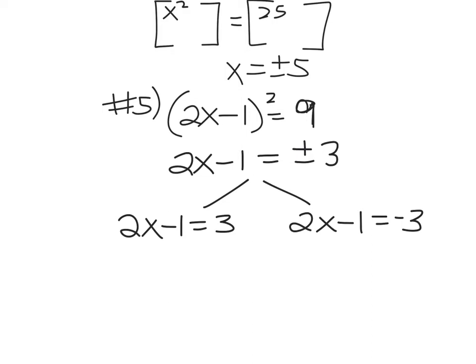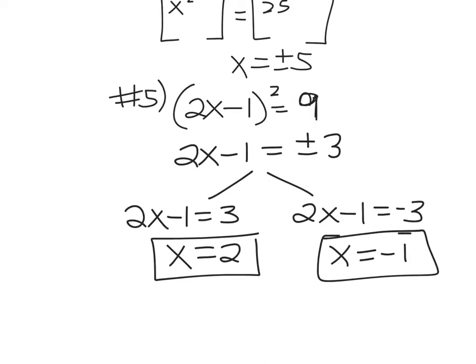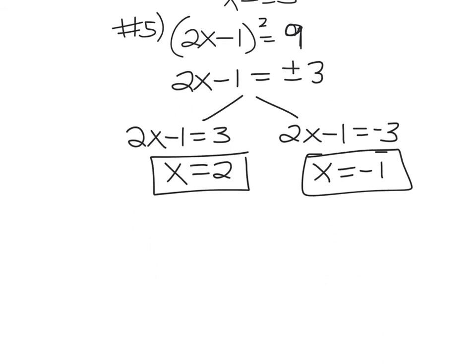So I've got 2x minus 1 can equal 3, or 2x minus 1 could equal negative 3, and it's going to give me the two answers that I need. Now, right here, if you're good at solving this in your head, great. You can do that. It's fine. Add 1. You get 4. Divide by 2. You get x equals 2. But try and show some work. And always, when you're solving equations, you work down the page. So many people still go side to side. It drives me crazy. And then you get x is negative 1.